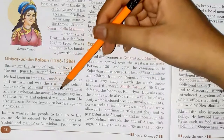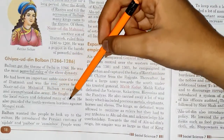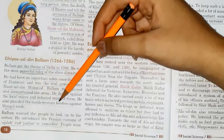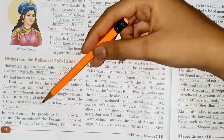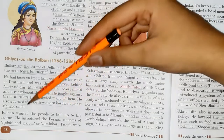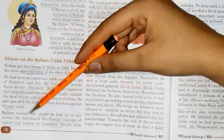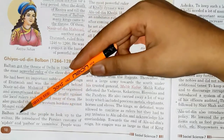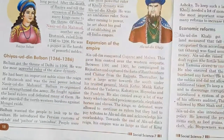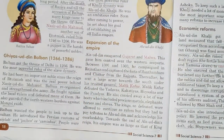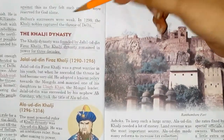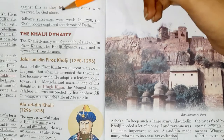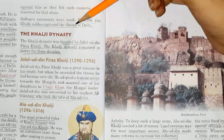Balban reorganized and strengthened the army. He fought against the local rulers and defeated many of them. He also guarded the northwestern borders against the Mongol raids. Balban wanted the people to look up to the Sultan, so he introduced the Persian customs of Sijda and Paibos (Zameenbos). However, people were against this, as they felt these customs were meant only for God. Balban's successors were weak, and in 1290, the Khilji nobles captured the throne of Delhi.